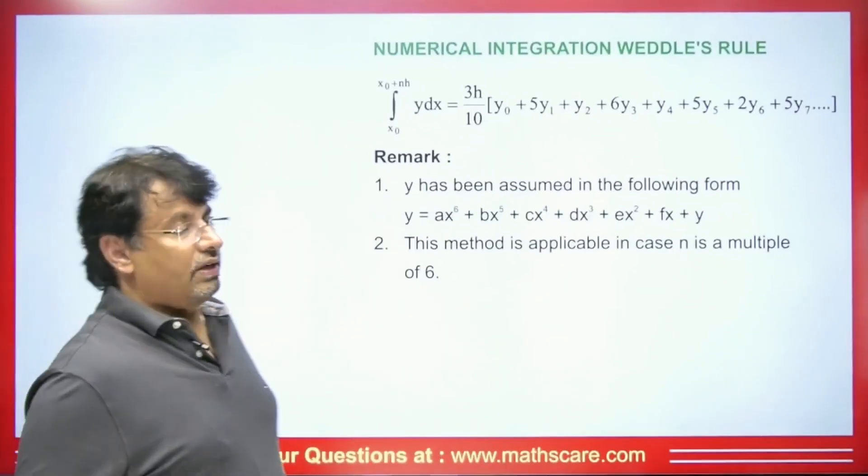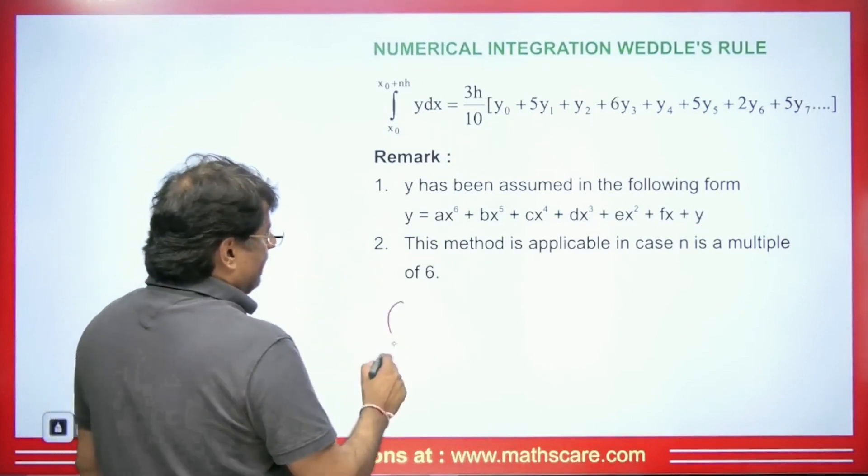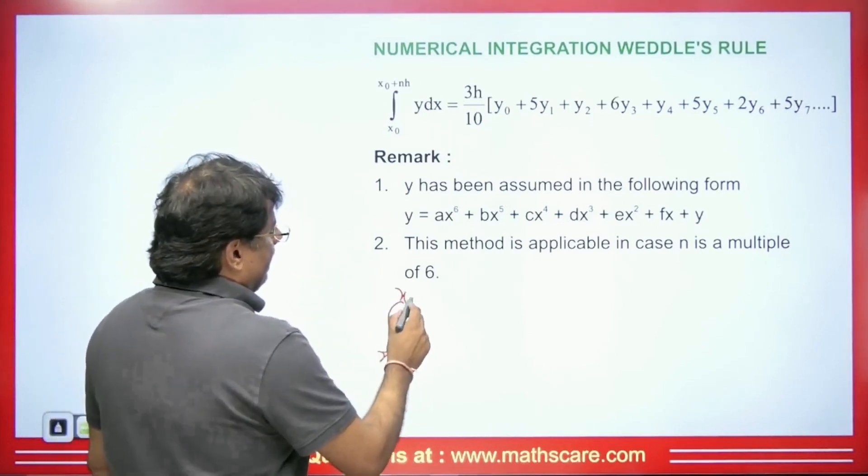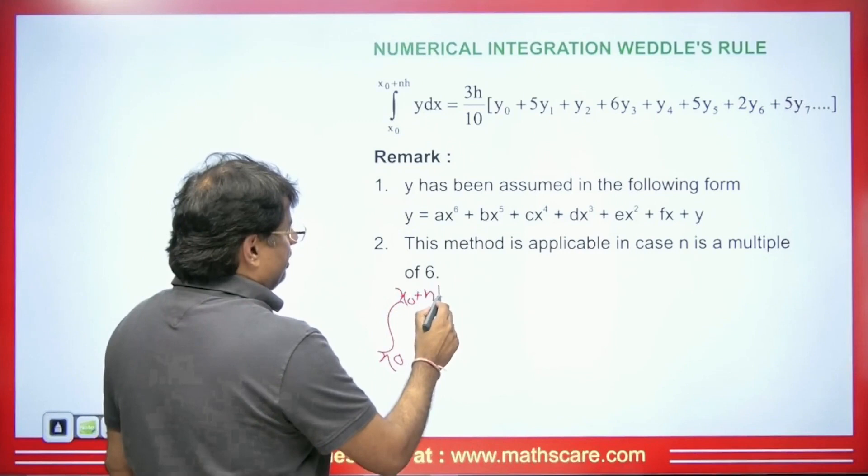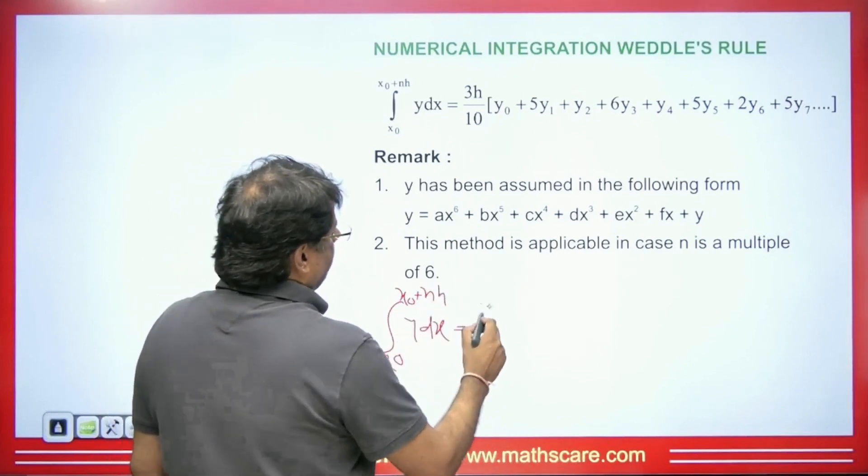I am going to discuss all these topics here and we will do some questions by this formula. Let's get started. Let's talk about numerical integration. Let's understand what is Weddle's rule. So here we have this formula from x₀ to x₀ plus nh. This is nh and then this ∫y dx is equal to we will get 3h/10.